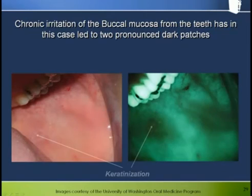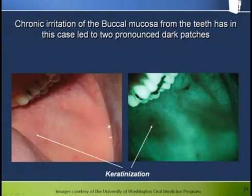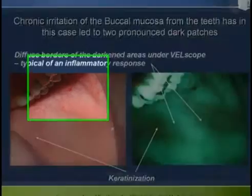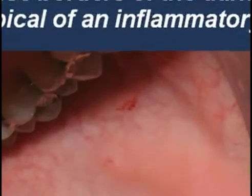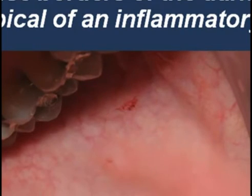Chronic irritation of the buccal mucosa from the teeth has in this case led to two pronounced dark patches rather than a line. The principle is still the same — notice the diffuse borders of the dark inflamed areas under Velscope. Also, the vessel damage with extravasated blood, associated with trauma, has a corresponding very dark presentation under Velscope, which is entirely to be expected.